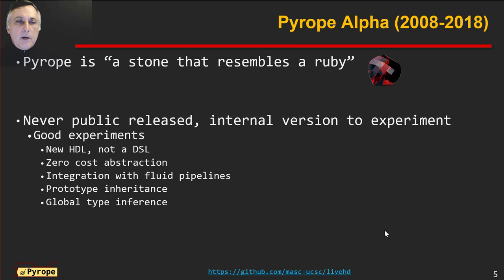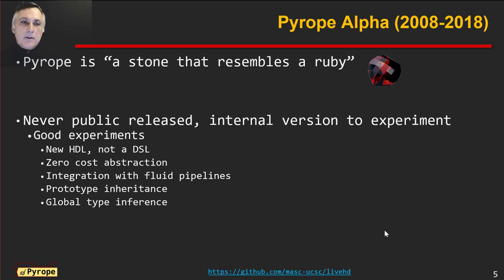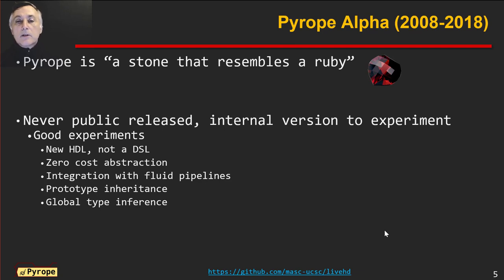So what is Pyrope? Pyrope is a stone that resembles Ruby — it's not Python. In our research team we tend to work with Ruby, and we really liked it. We started with a language similar to Ruby, but for hardware. The language evolved and no longer looks like Ruby. We never had a public release, only internal releases. We experimented with many things. Some highlights: we have a new HDL — not a DSL, a new language. We have zero-cost abstractions, integration with fluid pipelines, and features like global type inheritance and global type inference.